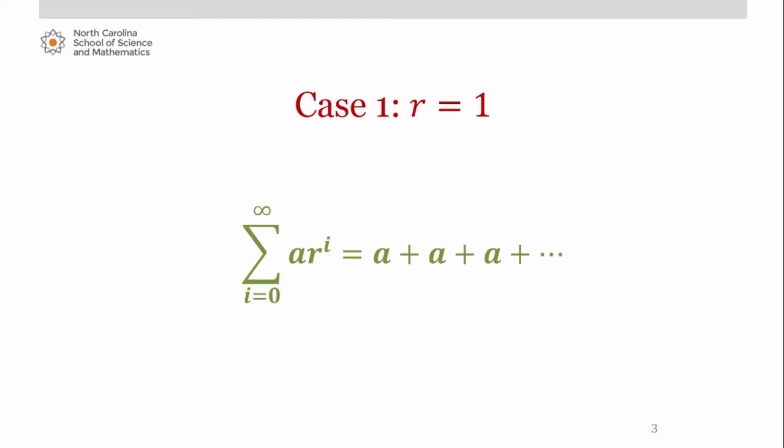Suppose first that r equals 1. This gives us the geometric series as you see here. Since this represents the sum of an infinite number of the same constant a, this sum is infinite. Therefore, this series would diverge.